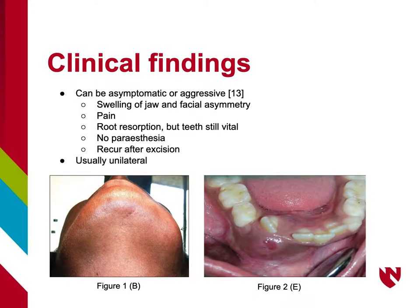The clinical findings for Central Giant Cell Granuloma can be asymptomatic or aggressive. Clinical findings may include asymptomatic swelling of the jaw resulting in facial asymmetry, pain, and root resorption of vital teeth. Central Giant Cell Granuloma does not cause paresthesia. They are usually unilateral and often recur after excision. Figure 1b shows a patient with diffuse swelling in the left body of the mandible, extending beyond the inferior border.